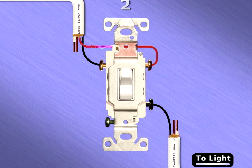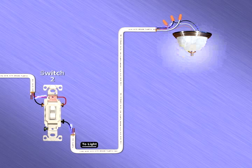If the switch is in the up position, the current will pass through to the common terminal and then out to illuminate the light.